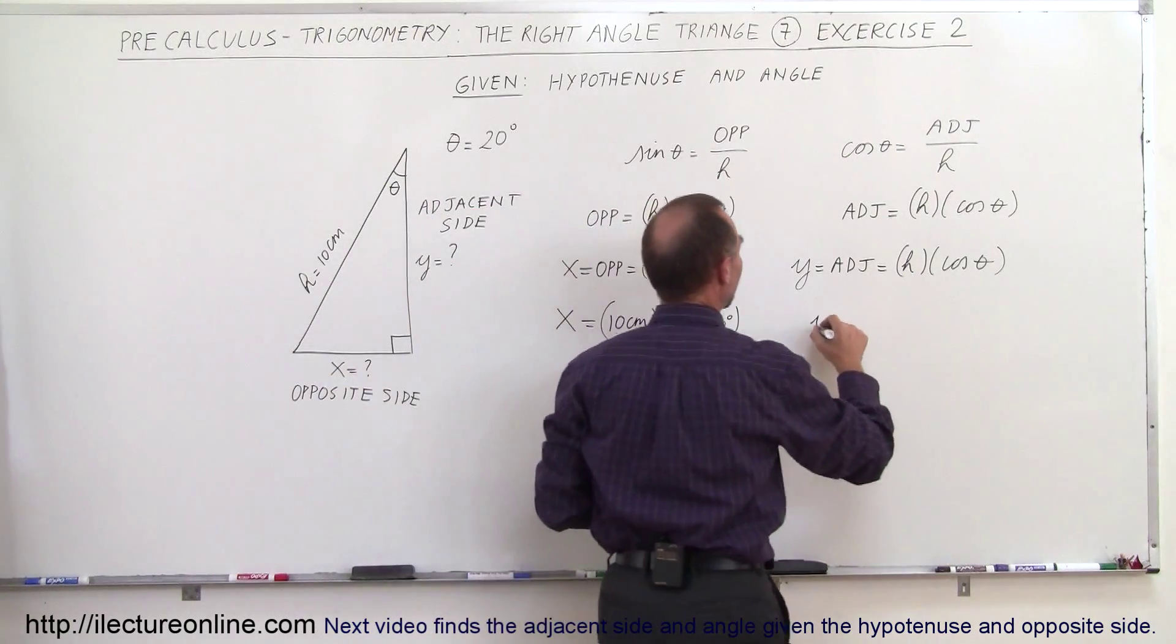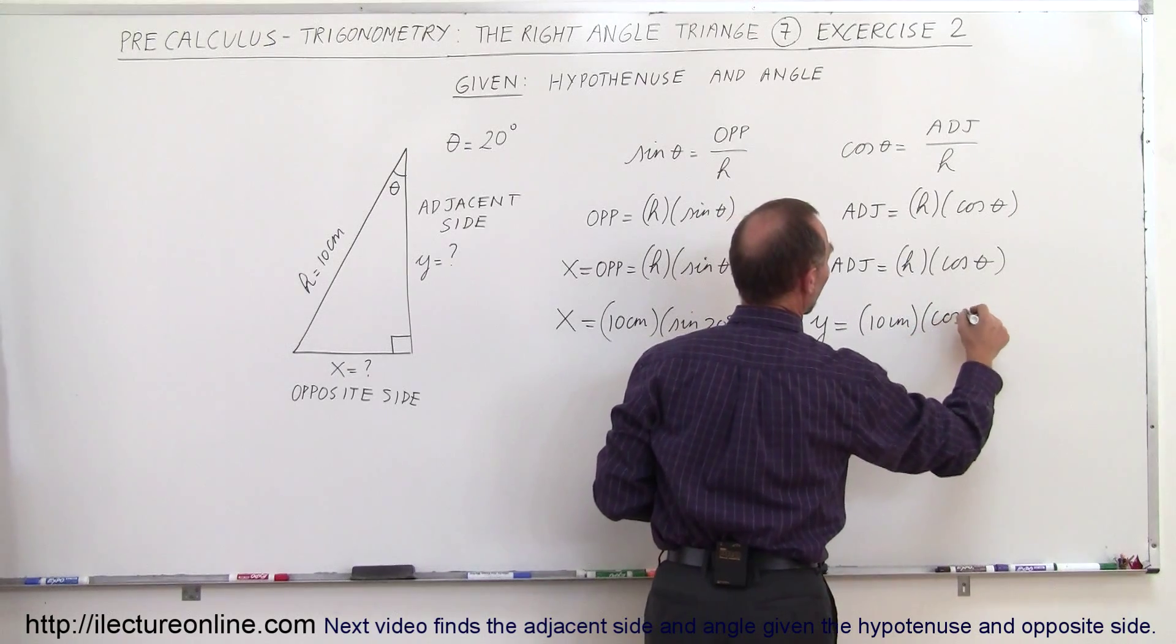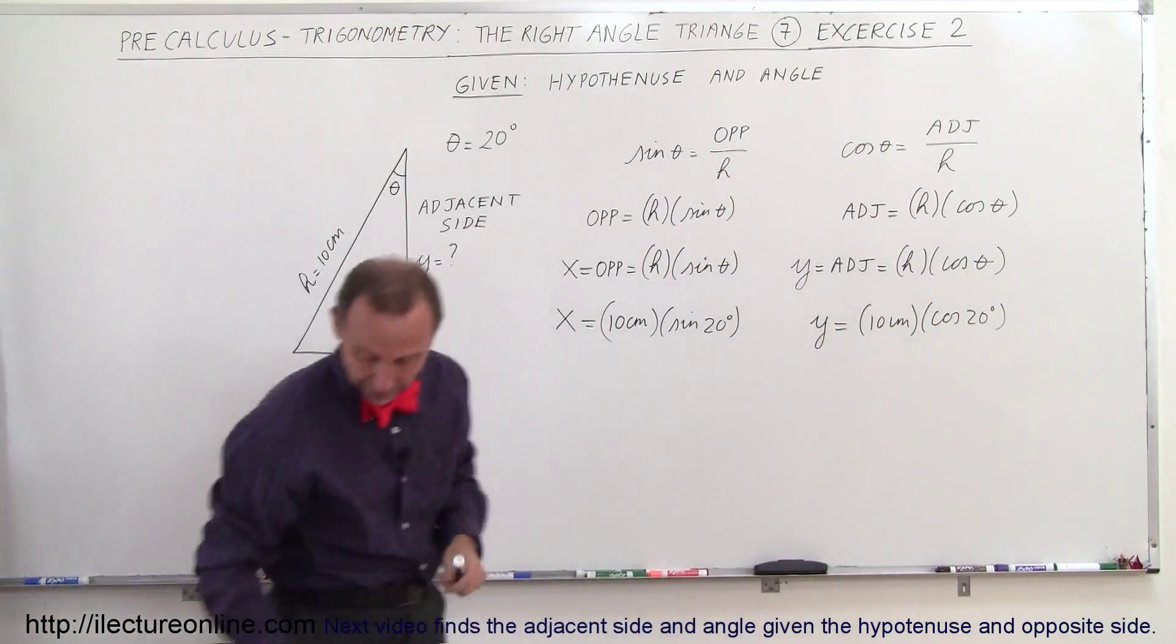In this case y would be equal to the hypotenuse 10 centimeters times the cosine of 20 degrees. And now of course you need to check out later.